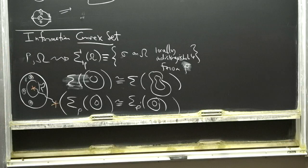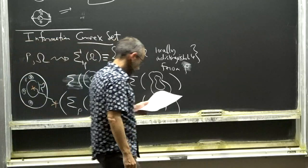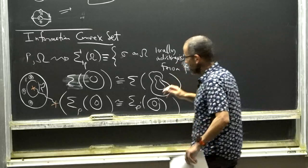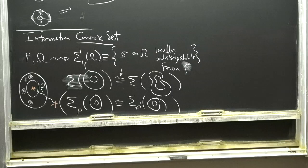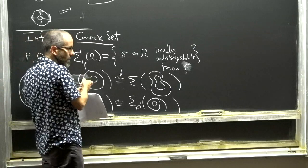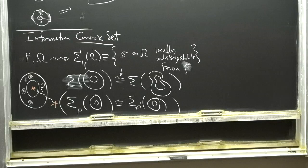In two dimensions there's an information convex set for the ball, one for the annulus, one for the two-hole disk, and so on. This equivalence means two things: they're the same as convex sets with the same topology, and also given two states in here there are corresponding states over there where the difference of their entropies is the same, and their relative fidelity is also the same.